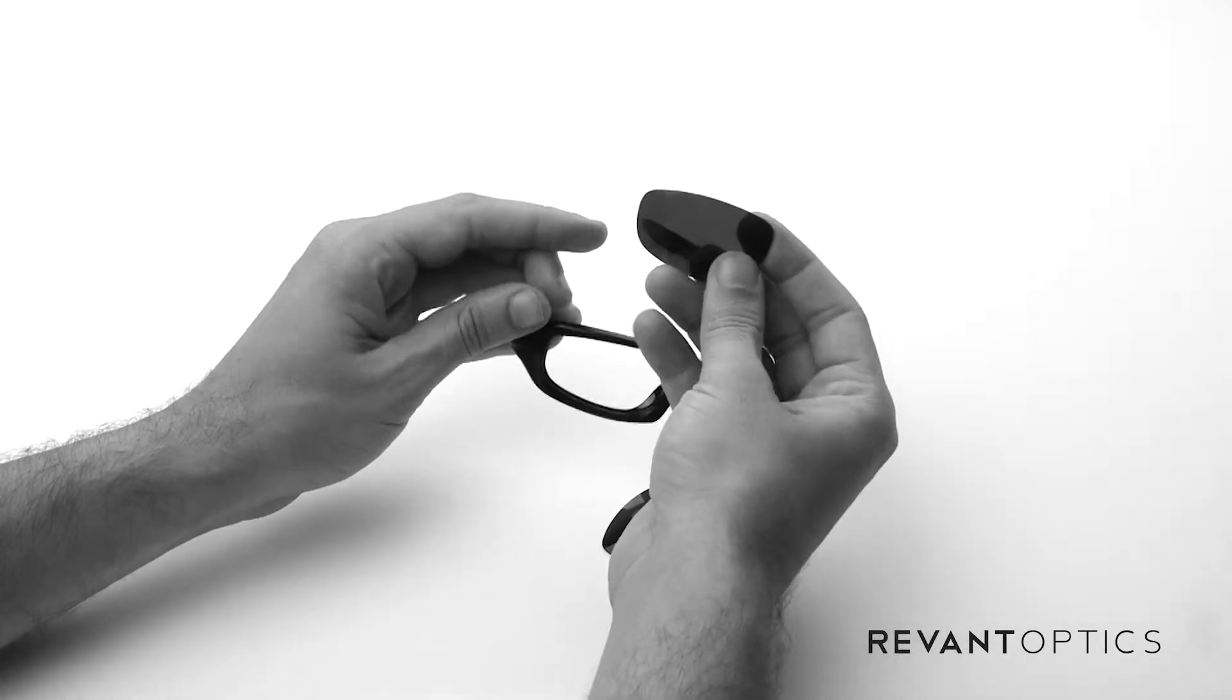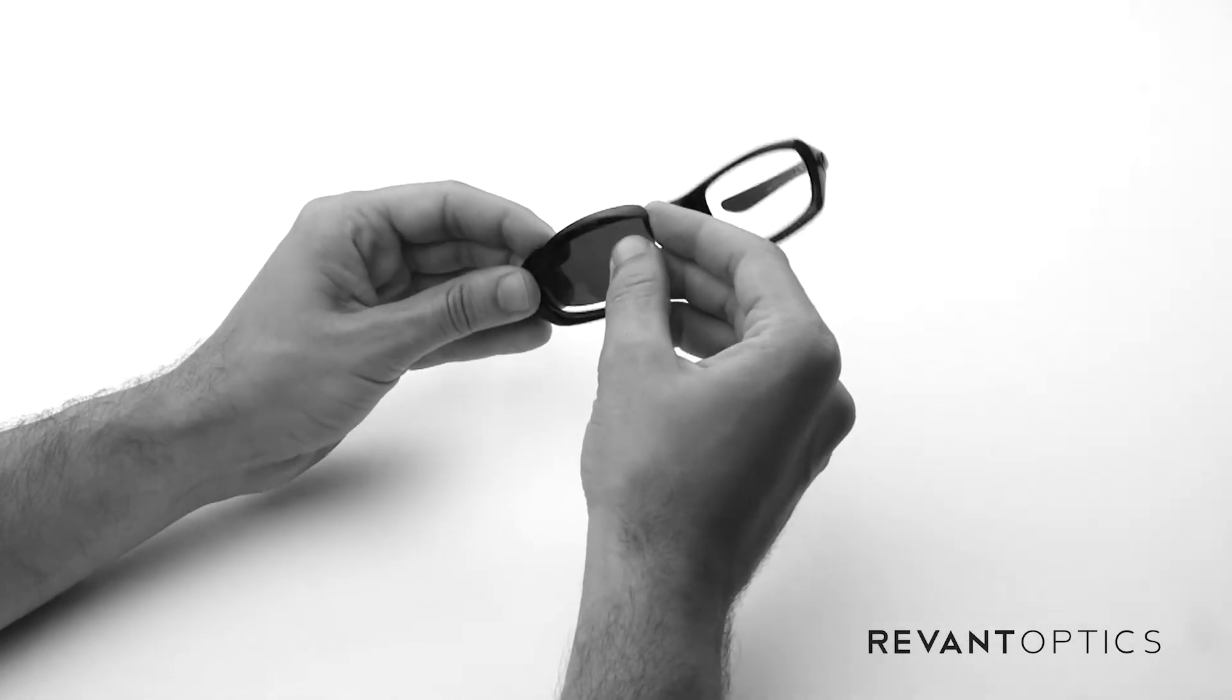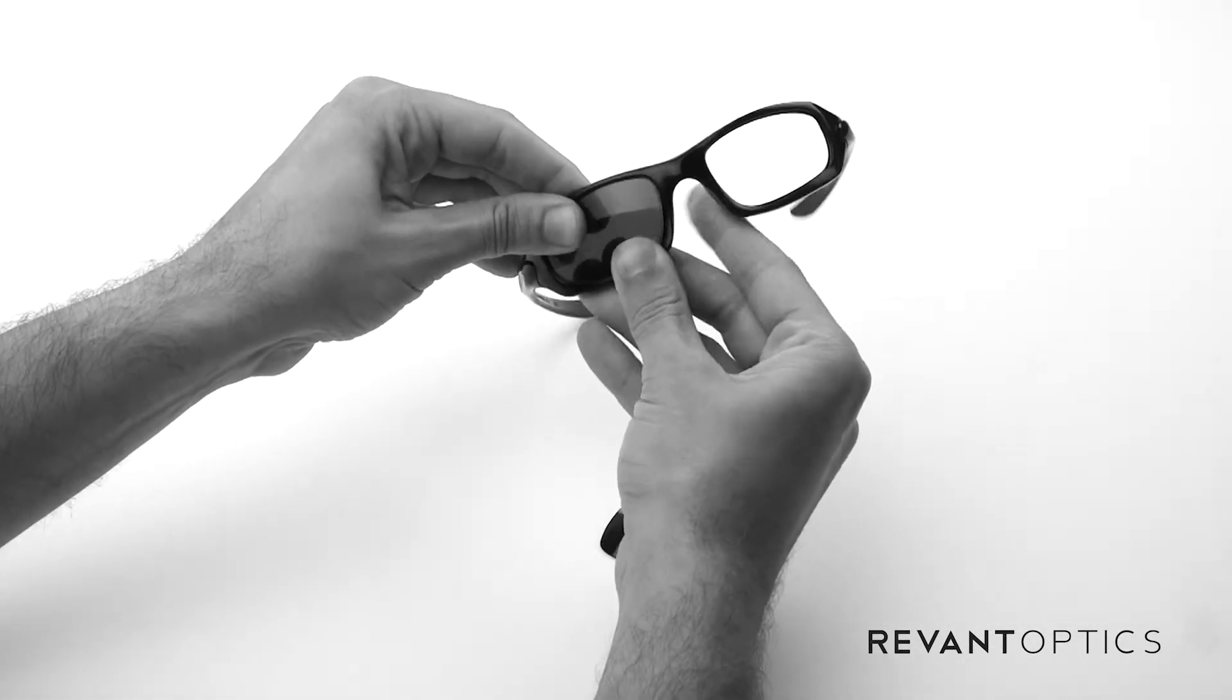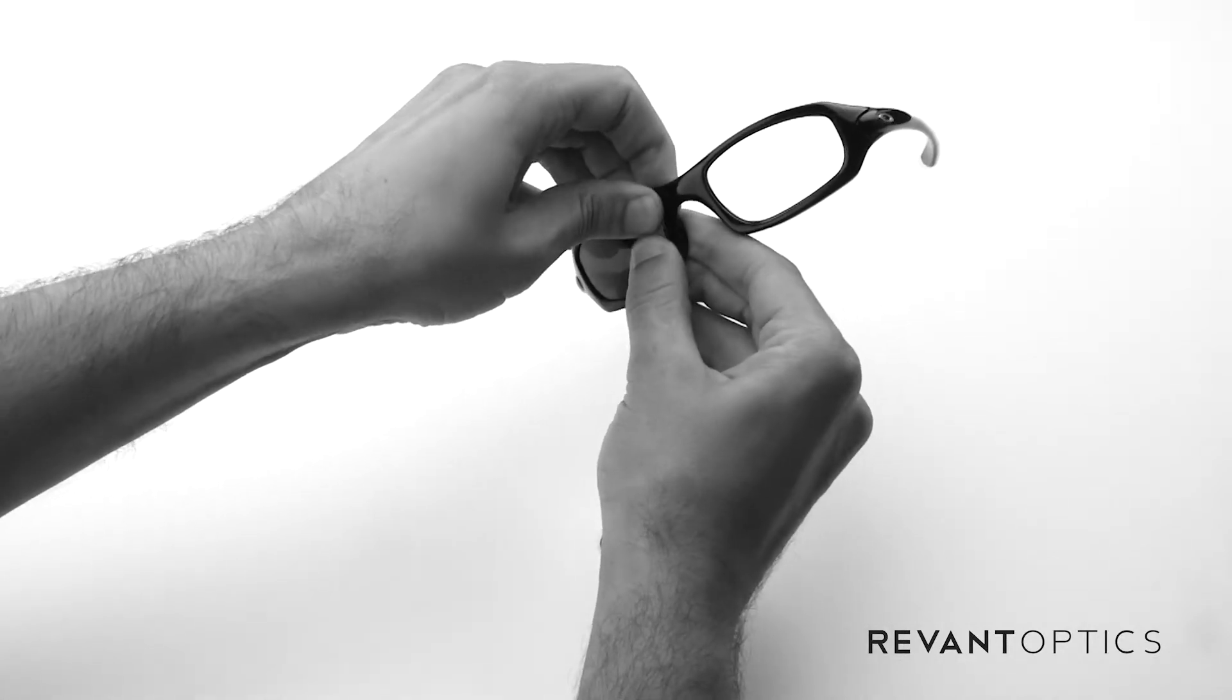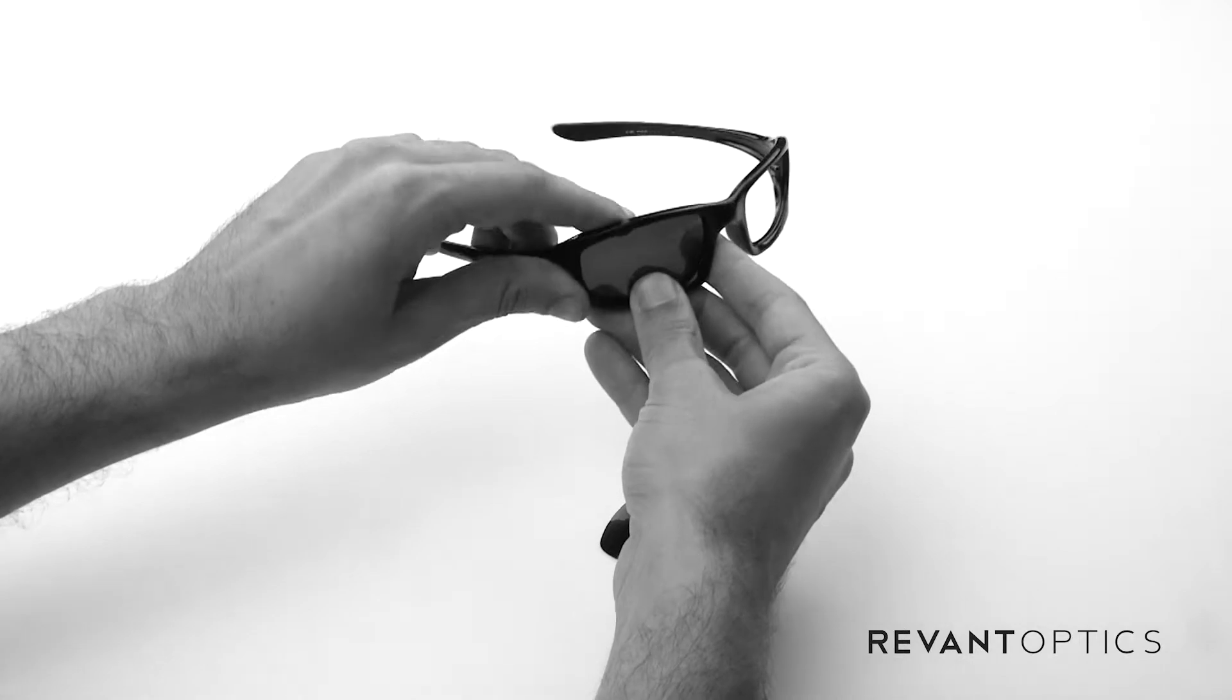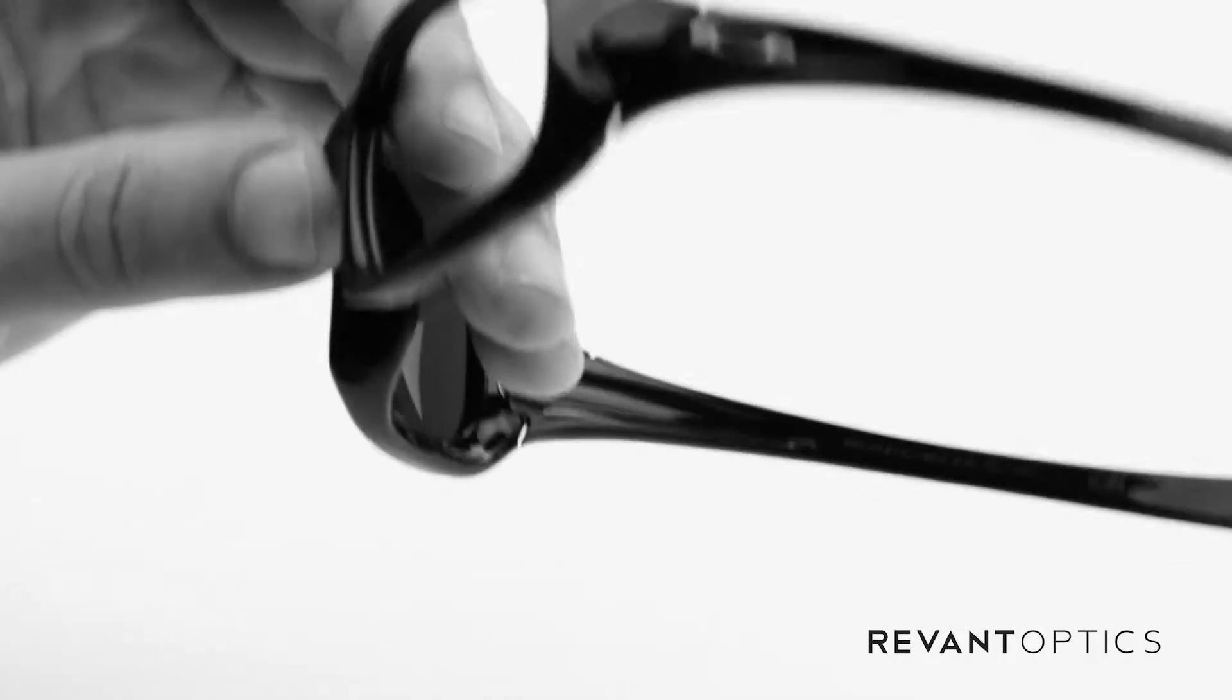To get them back in the frame, what you'll do is stick the outside edge in the groove right there and then use your thumbs to push around the outside. Pop it right back in. Again, you'll hear that popping noise. That's actually a good thing. It means that the lens is securely in place and in the groove.